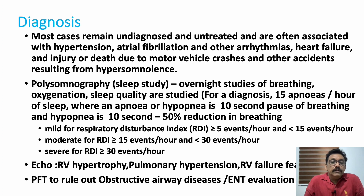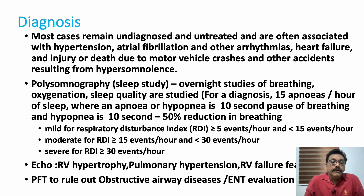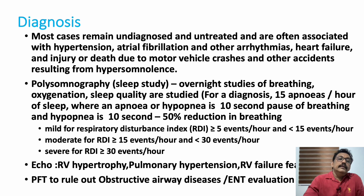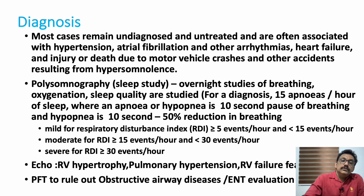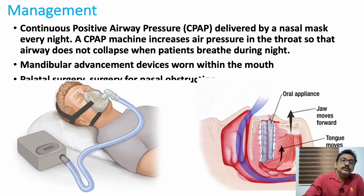Other important evaluations include complete ENT evaluation, pulmonary function tests to rule out obstructive airway diseases, and echocardiogram to rule out RV hypertrophy, pulmonary hypertension, and RV failure. Arterial blood gas mostly shows type 2 respiratory failure with chronic CO2 retention and compensation, and this can also be assessed in the emergency room.